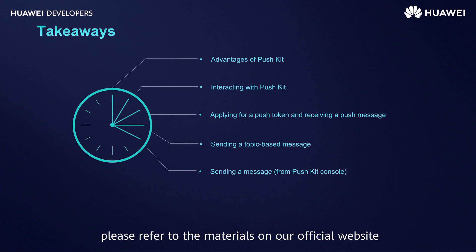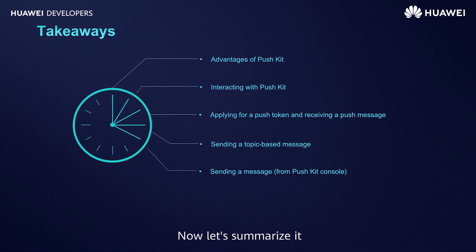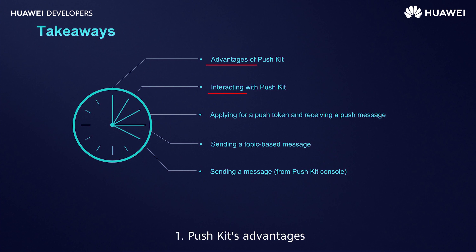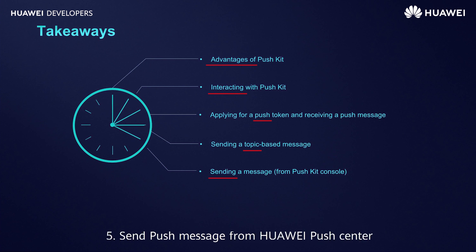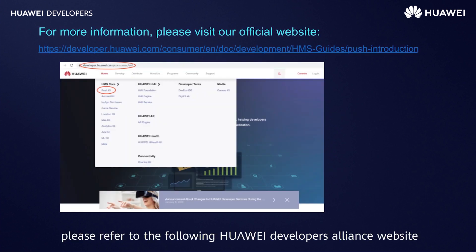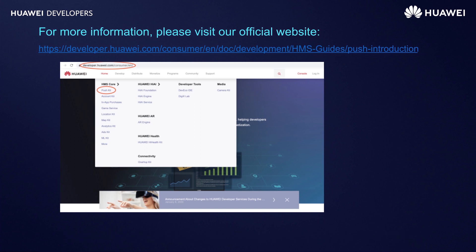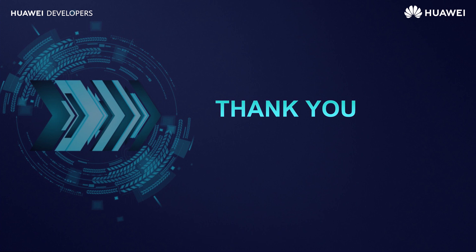For more information and usage, please refer to the materials on our official website. We have finished the introduction to Huawei PushKit. Let's summarize: the main contents of this video are: 1. PushKit's advantages. 2. PushKit's interaction process. 3. Acquiring Push Token and receiving push messages. 4. Subscribe topic messages. 5. Send push messages from Huawei Push Sender. If you need more information, please refer to the Huawei Developers website. If you have any questions in the development process, you may also give feedback through the following modes. Thanks for your time. Goodbye.